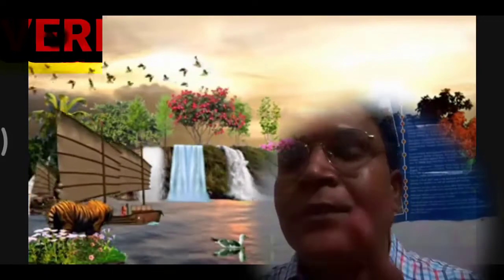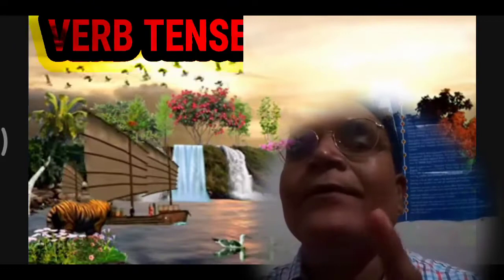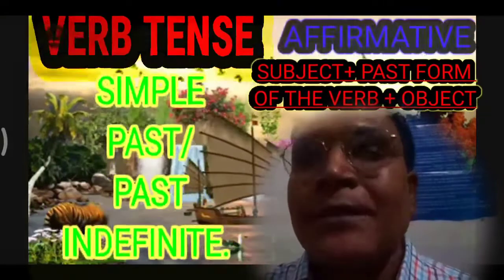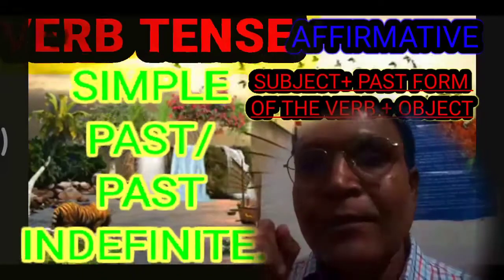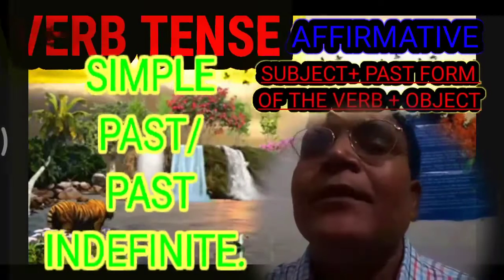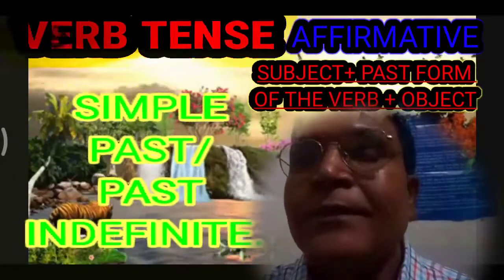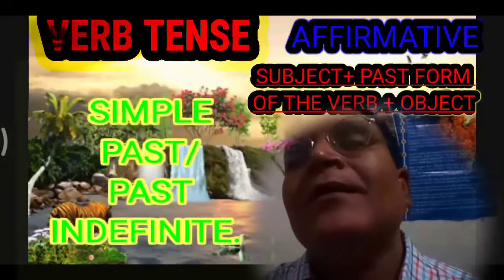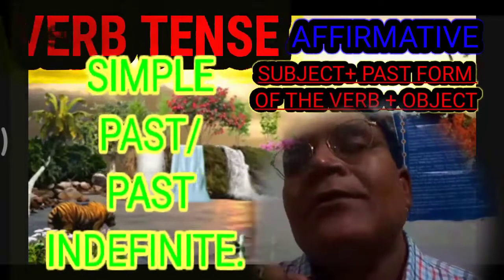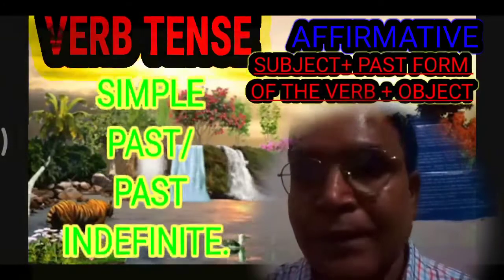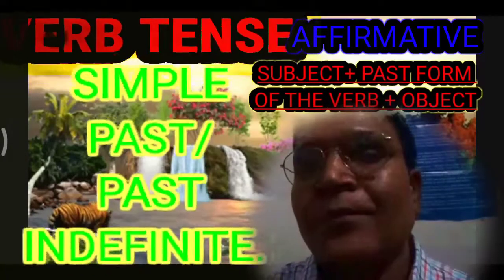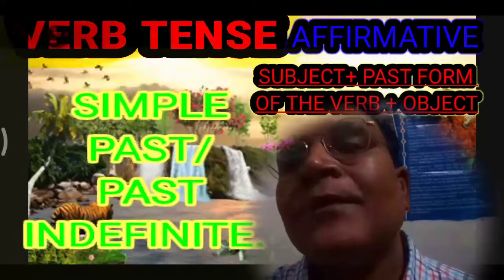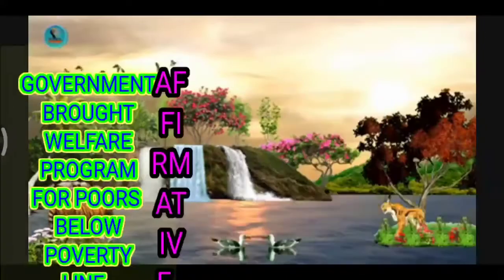The first form of verb tense is simple past, or past indefinite. We will consider its affirmative case. Its root formula is: subject plus past form of the verb plus object.